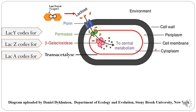In E. coli, the lac operon has three structural genes: lacY codes for permease, lacZ codes for beta-galactosidase, and lacA codes for transacetylase. All three enzymes are required by the bacteria when lactose is present in its environment, and the bacteria uses lactose to metabolize and produce energy.